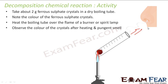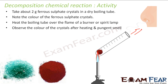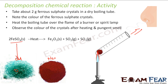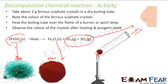We observe the color changes to red, and we also notice a pungent smell coming out. So there are two things: the color change and the smell. The ferrous sulfate — the blue compound — when heated, converted to Fe₂O₃ and also produced a pungent gas. One compound is converted to multiple smaller compounds. This is a typical example of a decomposition chemical reaction where a bigger compound is decomposed into smaller components.